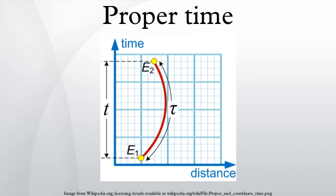By contrast, coordinate time is the time between two events as measured by a distant observer using that observer's own method of assigning a time to an event.